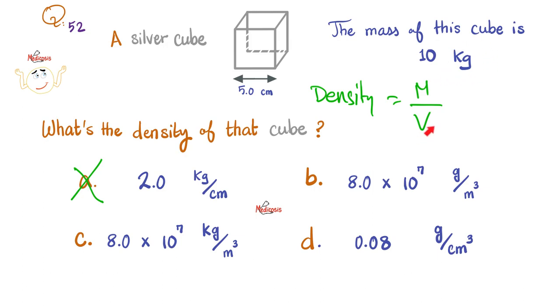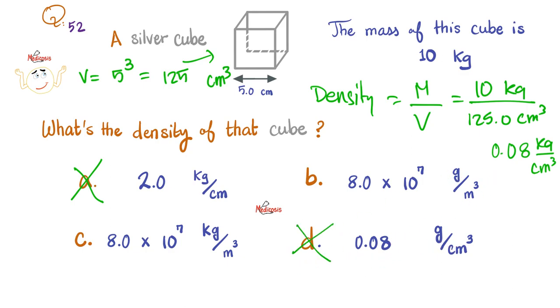Let's start by kilograms over cubic centimeters. What's the volume of this cube? If the side is 5, then the volume equals 5 cubed, which gives me 125 cubic centimeters. Then the density is mass over volume. What's my mass here? 10 kilograms over the volume, which is 125 cubic centimeters. This will give me 0.08 kilograms over cubic centimeters. Do I have this option here? No, I do not have this, so I know this is not true because it says grams instead of kilograms.